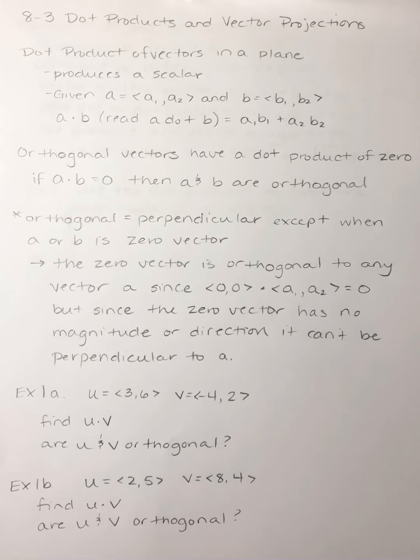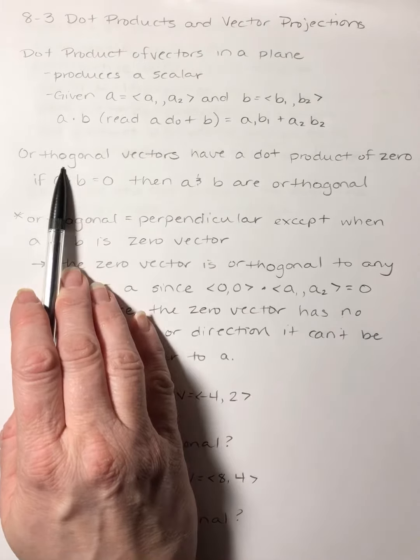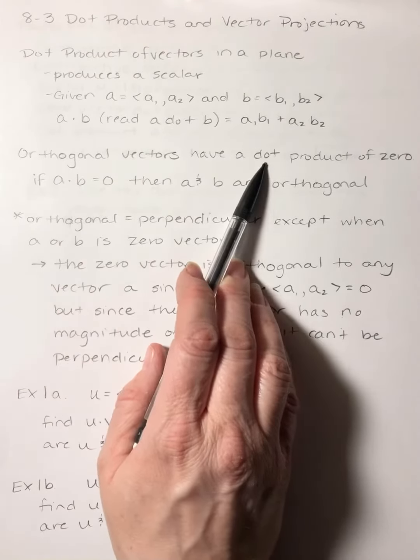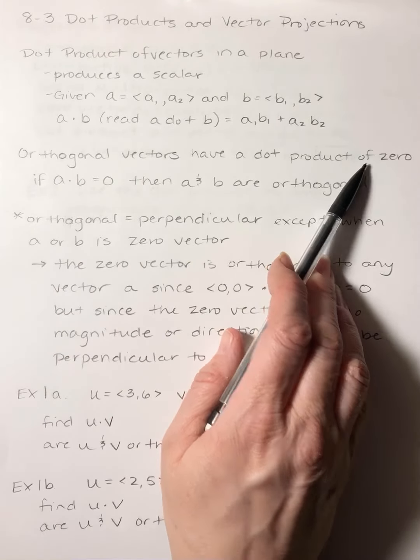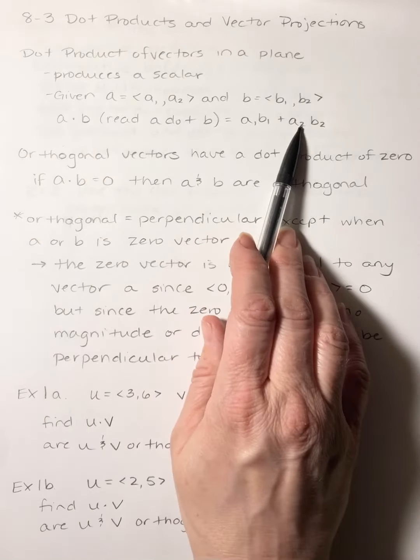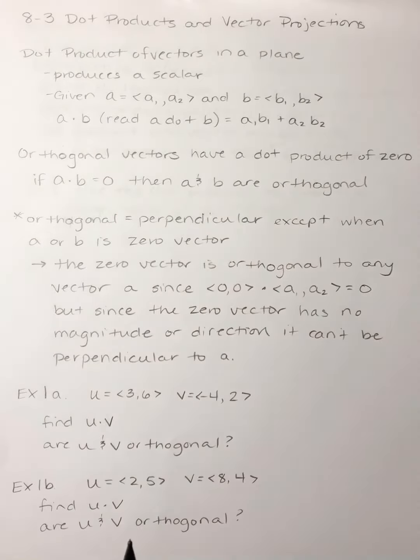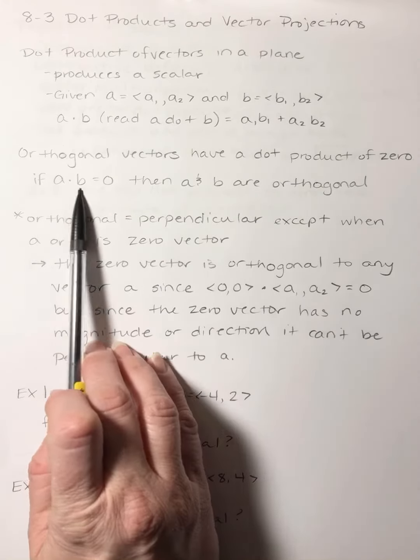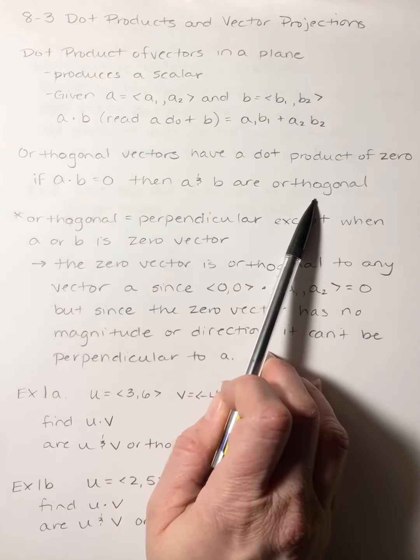So what does the dot product mean? What does it help us do? Orthogonal vectors have a dot product of zero. So if you find the dot product and the dot product equals zero, the two vectors are orthogonal. If a dot b is zero, then a and b are orthogonal.